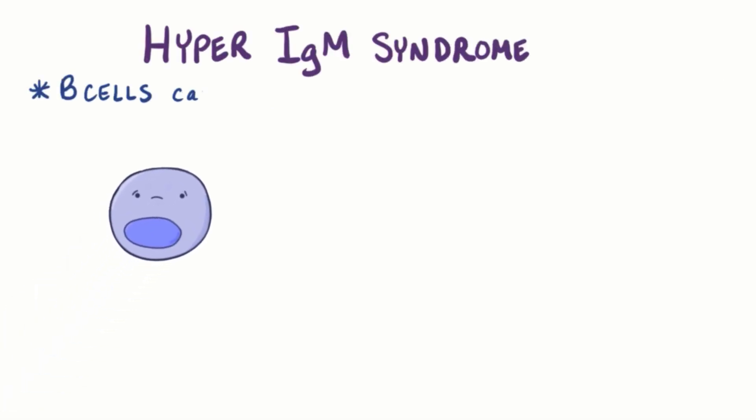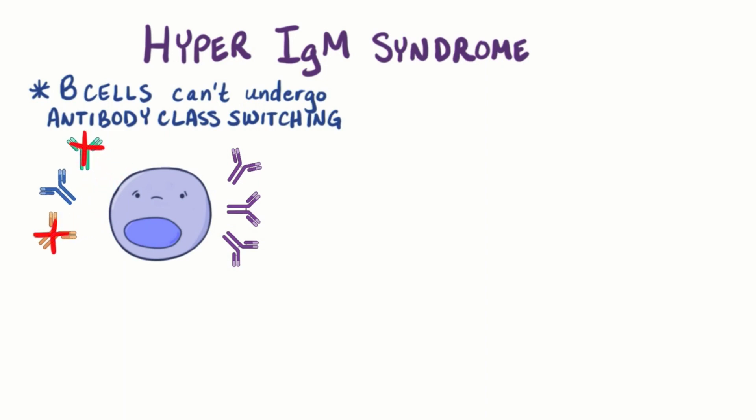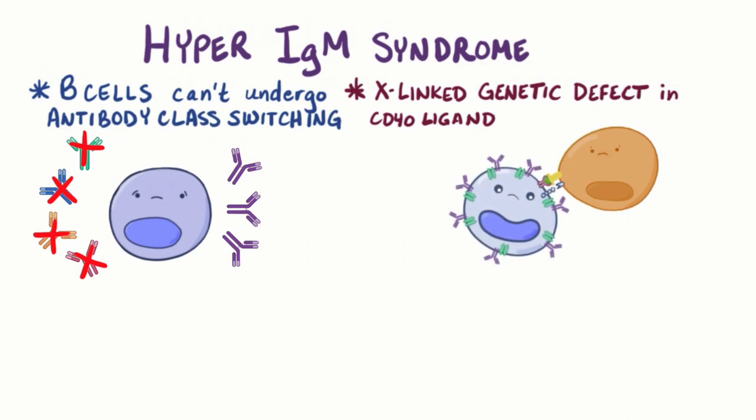As a quick recap, hyper-IgM syndrome is characterized by a defect in the ability of B cells to undergo antibody class switching, meaning that they can produce IgM antibodies, but not IgG, IgA, IgE, or IgD. The most common cause is an X-linked recessive genetic defect of the CD40 ligand, leaving helper T cells incapable of initiating antibody class switching in B cells.